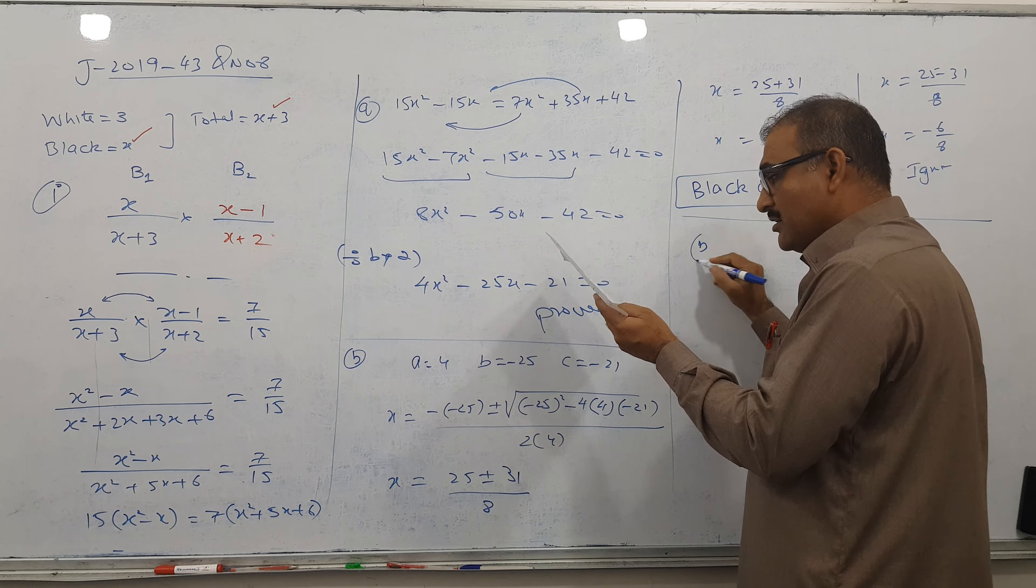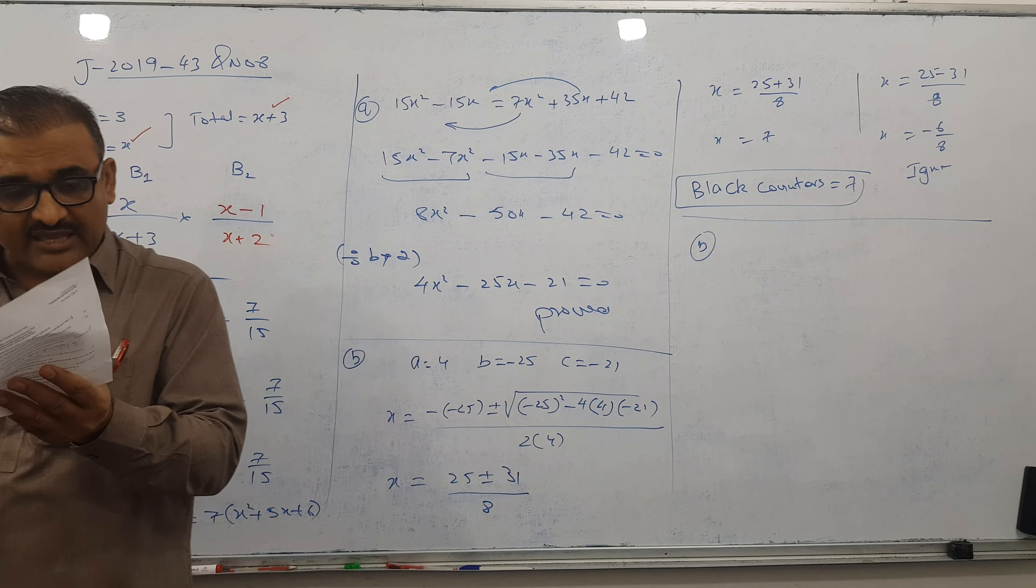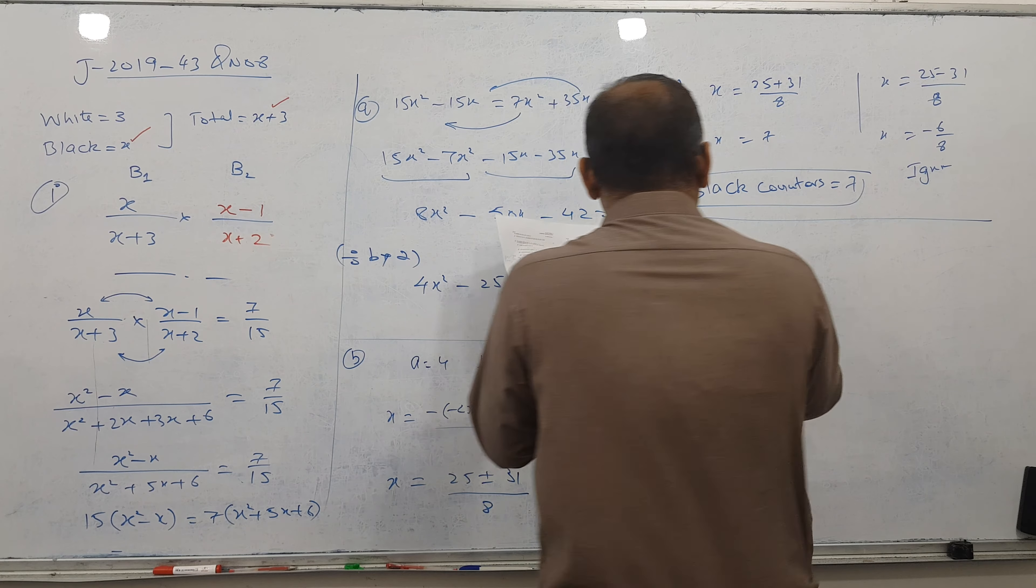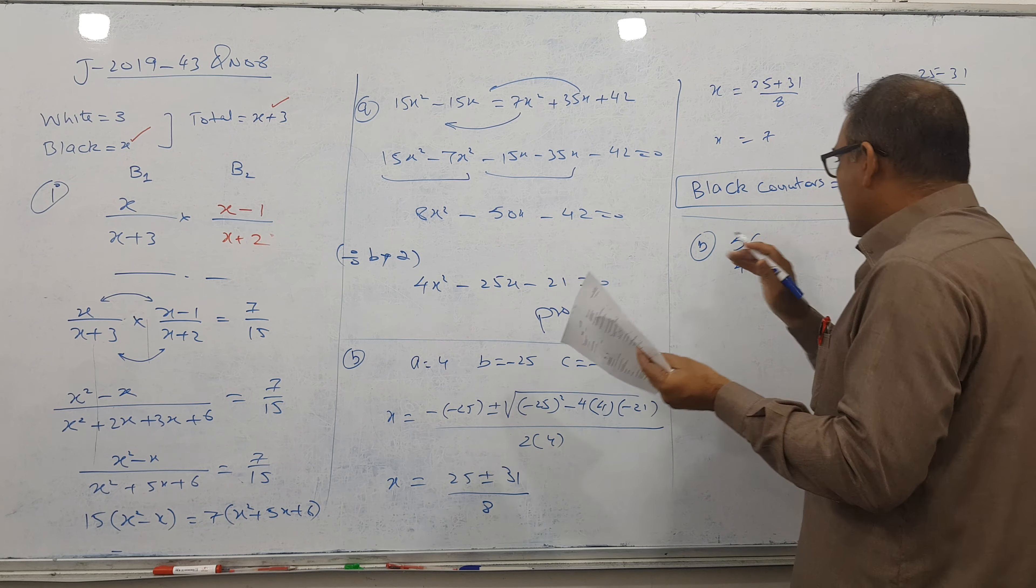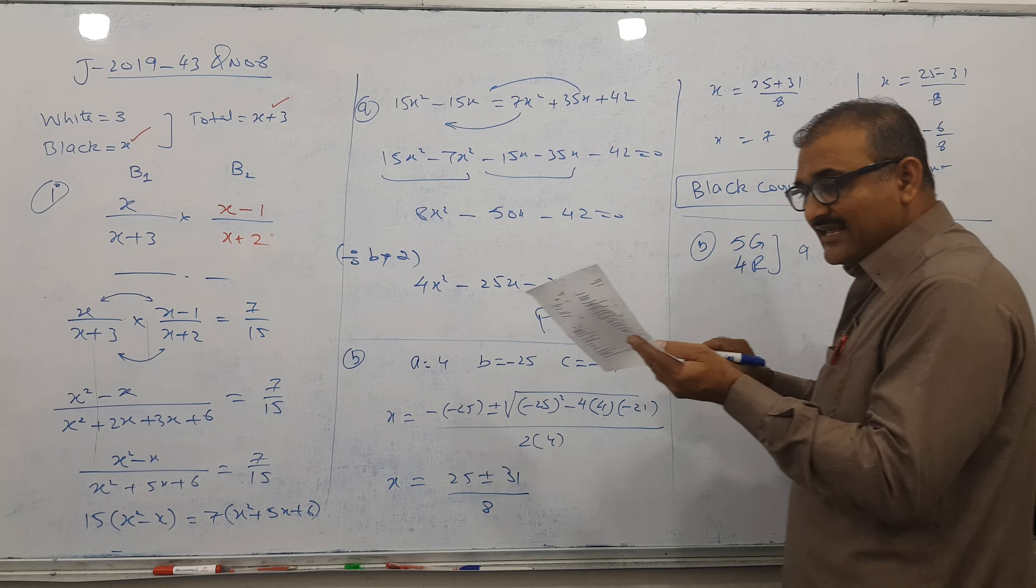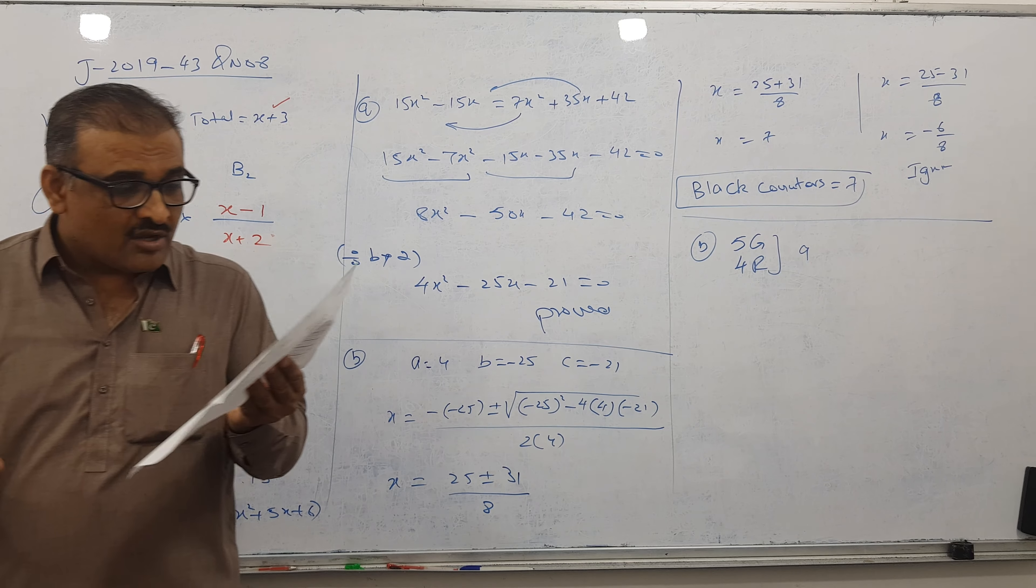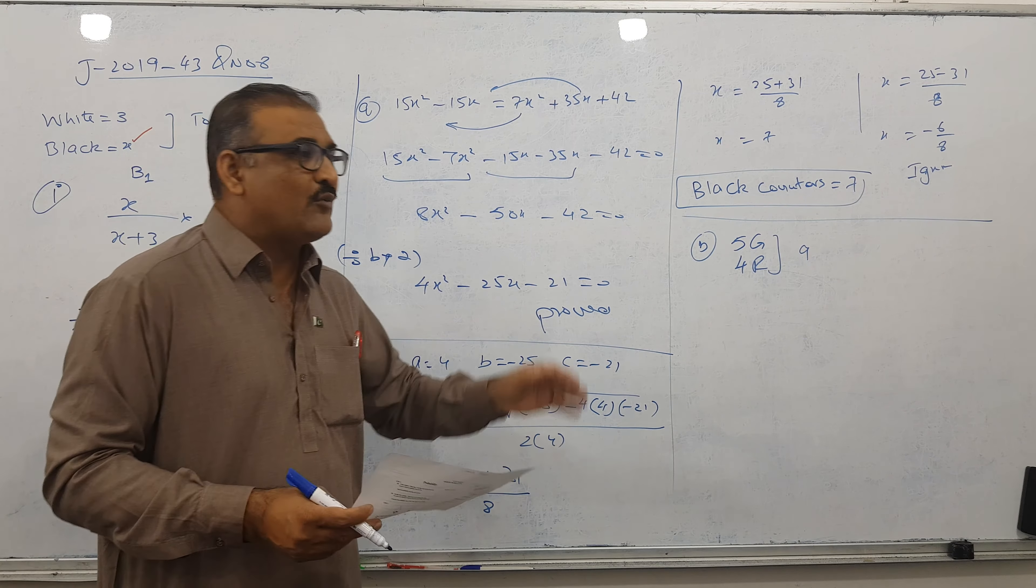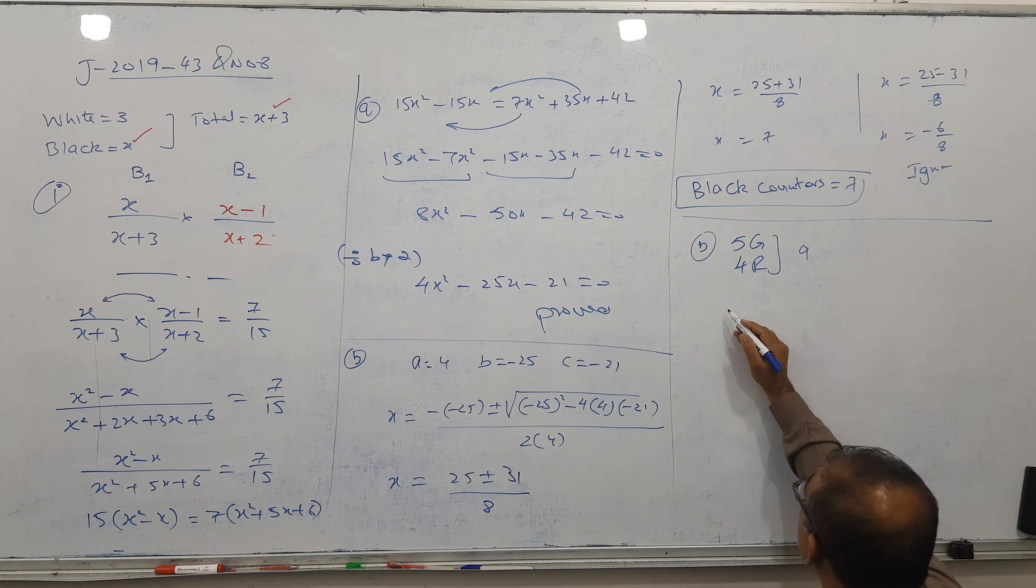Let's go for the next part. He's asking part B. He said she has a bag of 5 green counters and 4 red counters. I repeat: 5 green and 4 red, so total are 9. She takes 3 counters randomly from the bag without replacement. What's the probability that 3 counters are all the same color? We can make a diagram or without diagram.